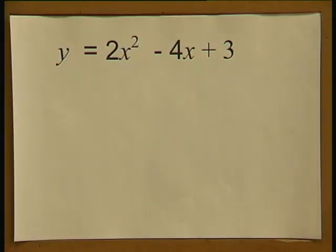y is equal to 2x squared minus 4x plus 3. We don't even need to factorize because we have the quadratic formula, and we now have the values of a, b, and c. We will use them to calculate the turning point and the equation of the axis of symmetry.